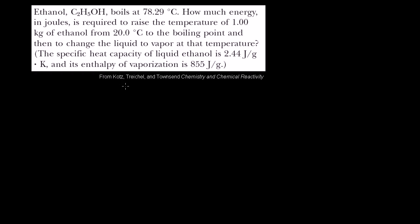Have this problem here from Chapter 5 of the Kotz, Trichol, and Townsend Chemistry and Chemical Reactivity book. I'm doing this with their permission. They tell us that ethanol, C2H5OH, boils at 78.29 degrees Celsius. How much energy in joules is required to raise the temperature of 1 kilogram of ethanol from 20 degrees Celsius to the boiling point, and then change the liquid to vapor at that temperature?